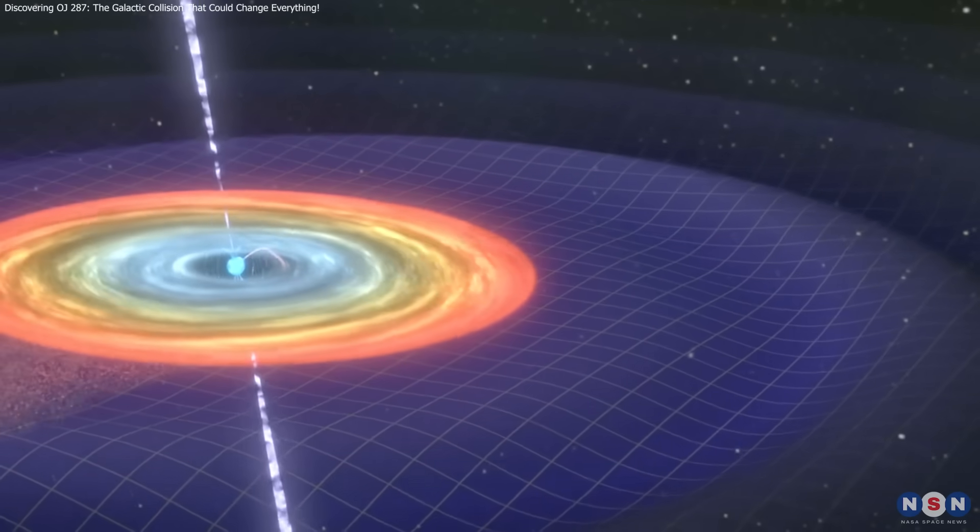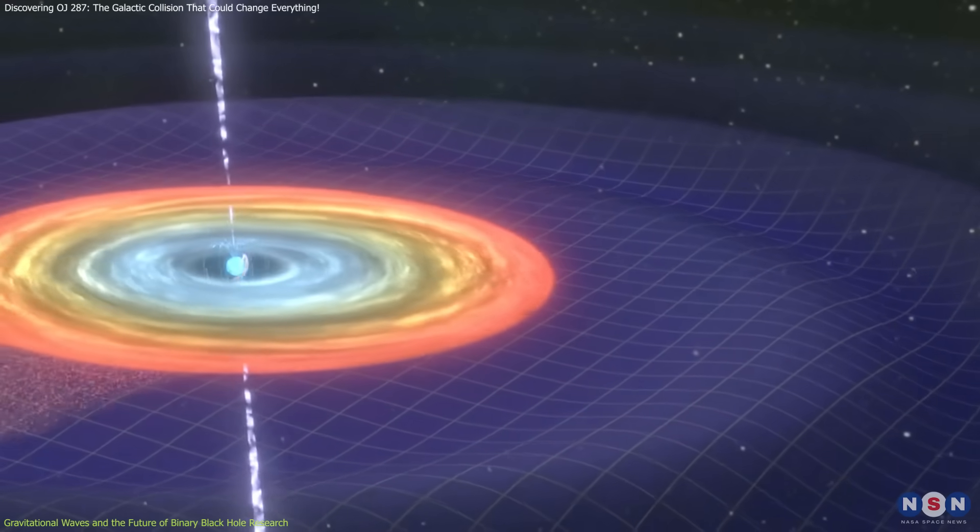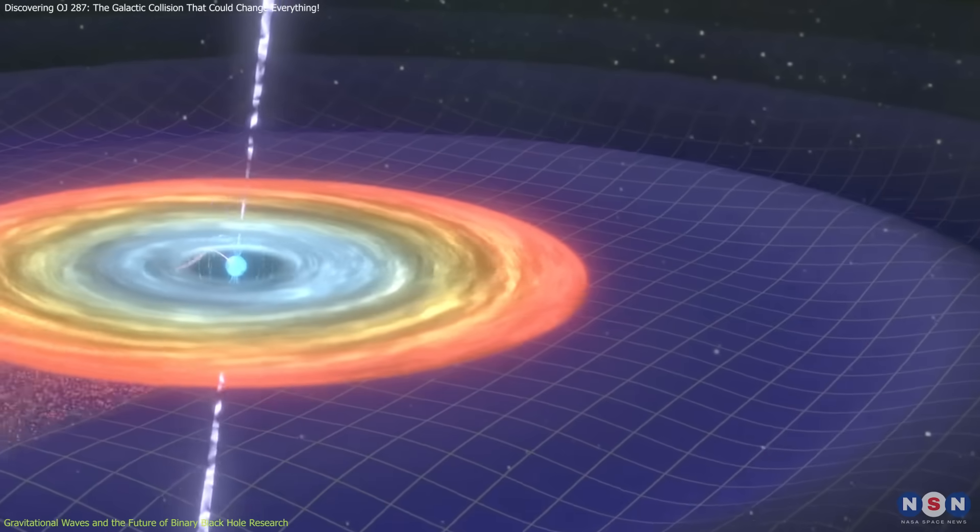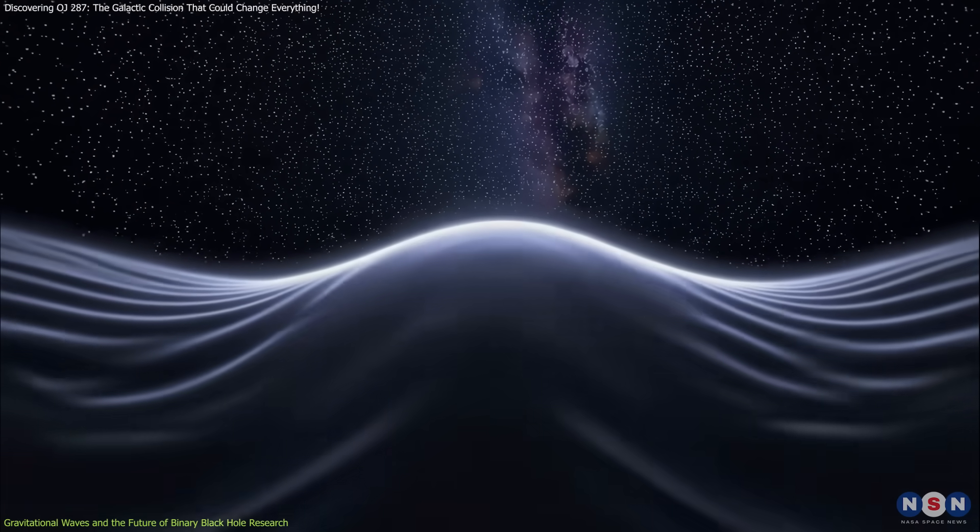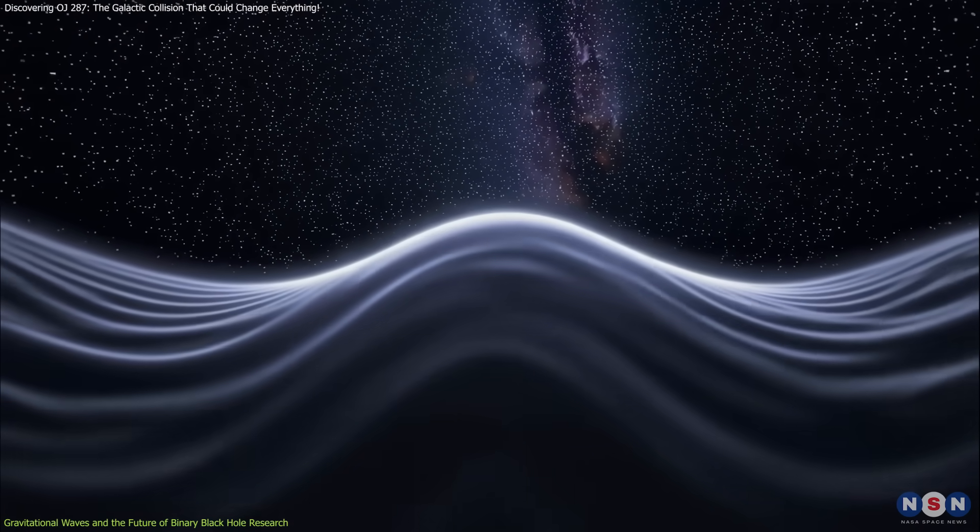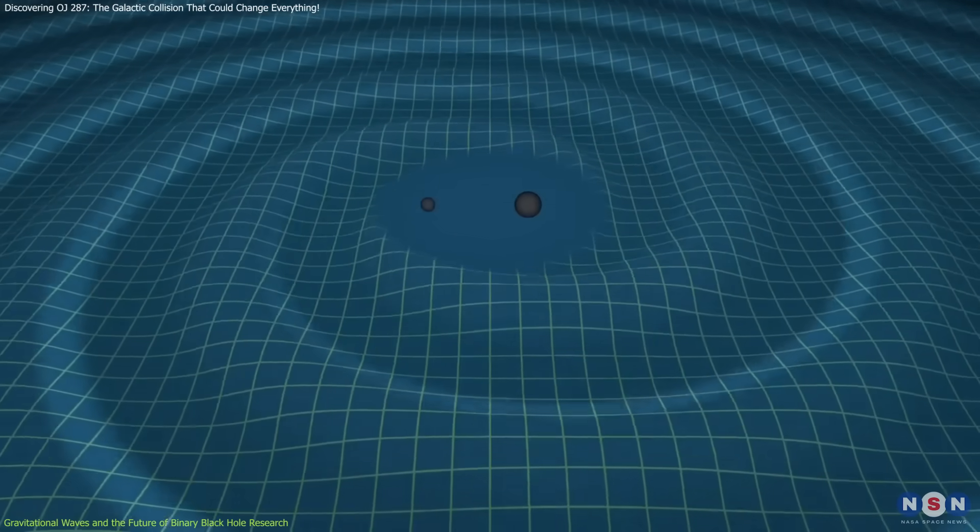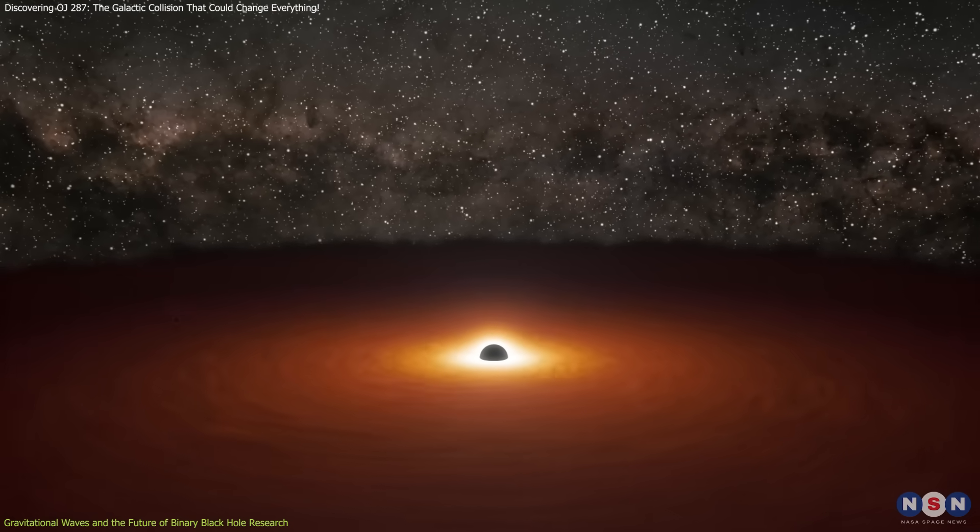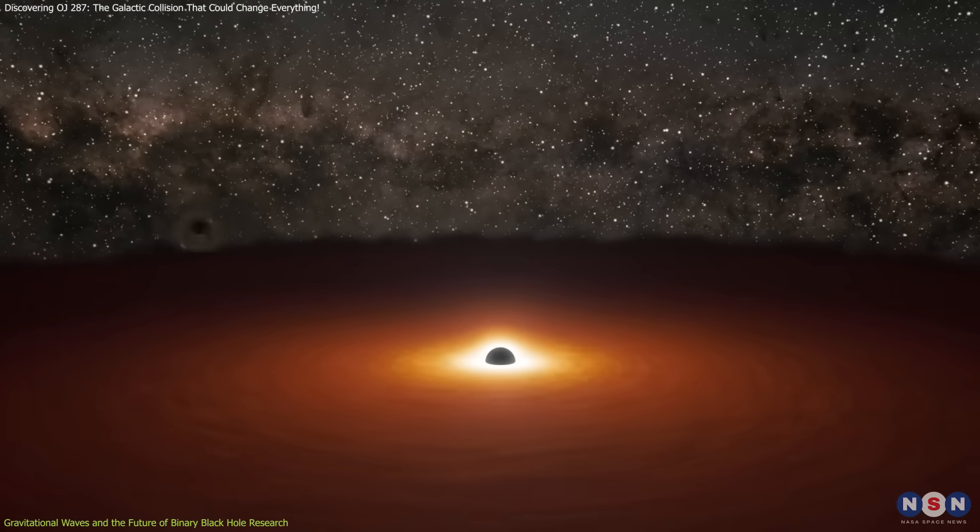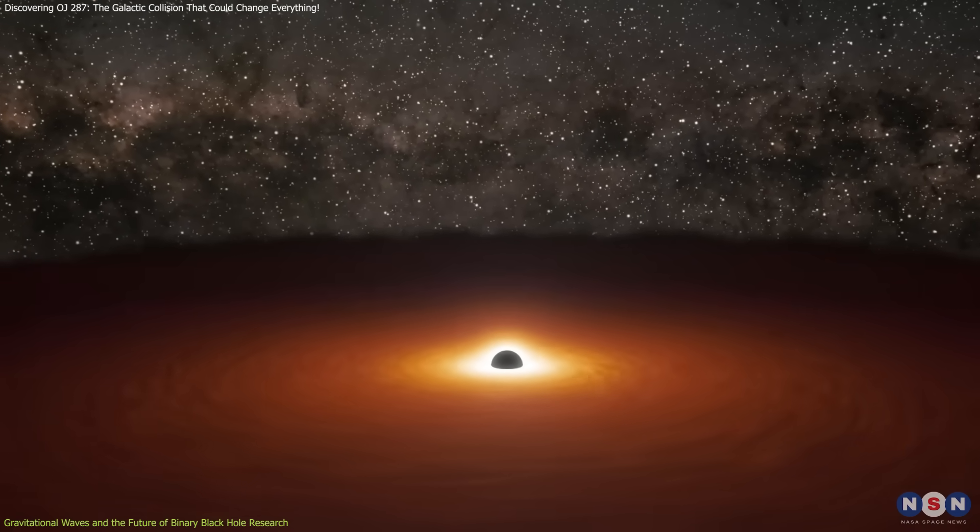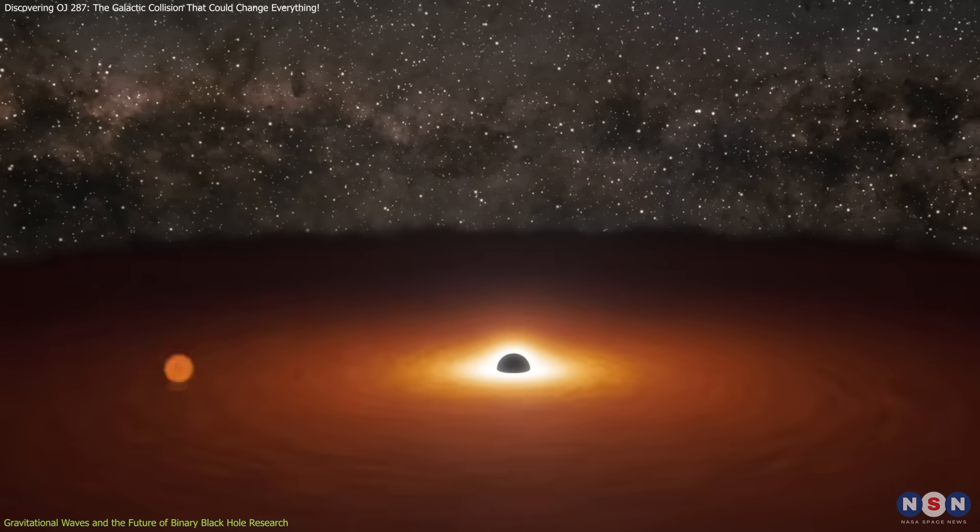One of the most exciting aspects of OJ 287 is its potential for generating gravitational waves. Gravitational waves are ripples in spacetime caused by the acceleration of massive objects, such as merging black holes. In the case of OJ 287, the two black holes are slowly spiraling toward each other, emitting weak gravitational waves in the process.